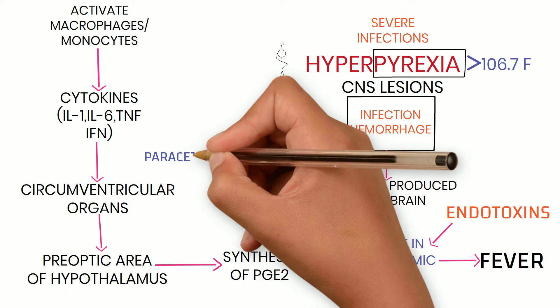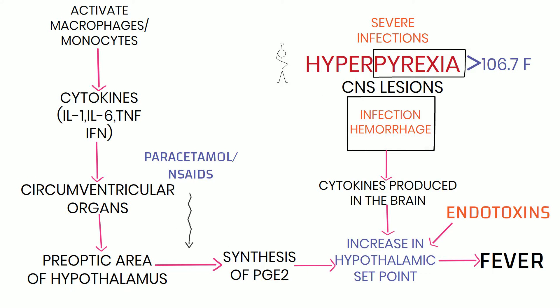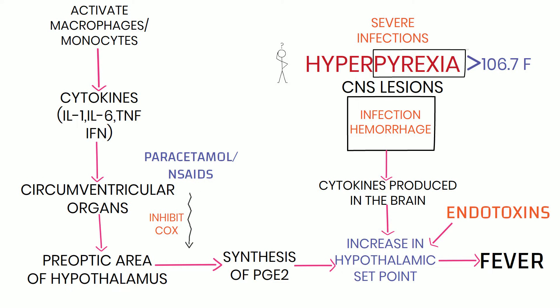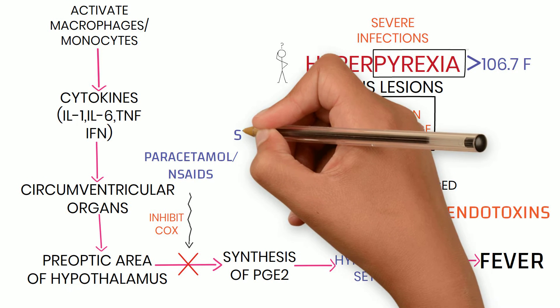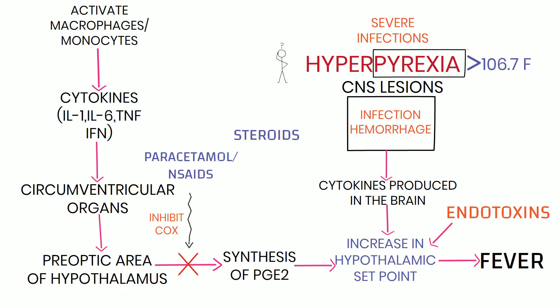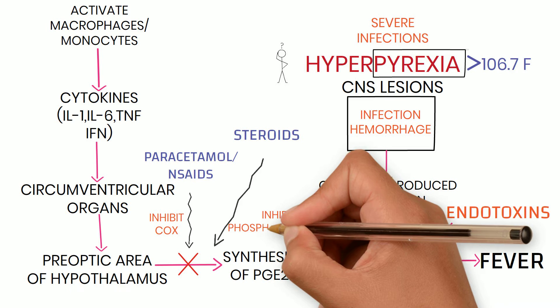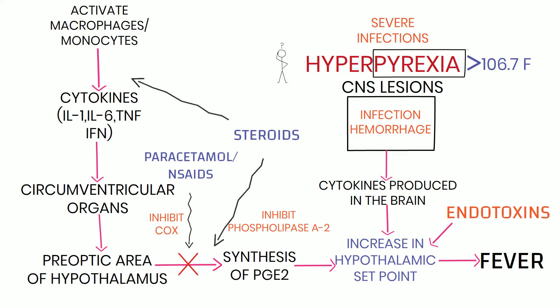How do drugs act as antipyretics? Paracetamol and NSAIDs inhibit the cyclooxygenase enzyme, thereby inhibiting the synthesis of prostaglandin E2. Steroids act in two steps: they inhibit the phospholipase A2 enzyme so that arachidonic acid is not released and cannot be converted into prostaglandin E2, and they also inhibit the production of cytokines.